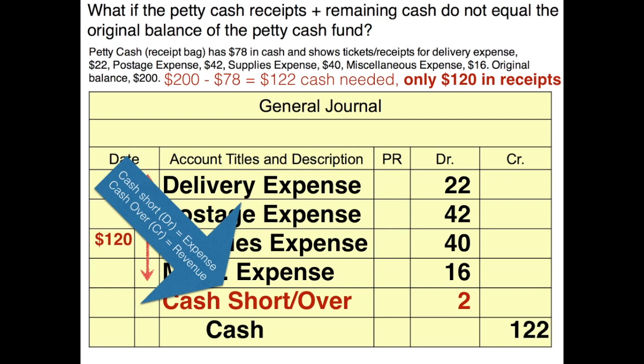When the bag is short, the cash short and over account acts like an expense. If you have a debit balance in cash short and over at the end of the period, it acts like an expense on the income statement. If your cash short and over has a credit balance, it acts like revenue.